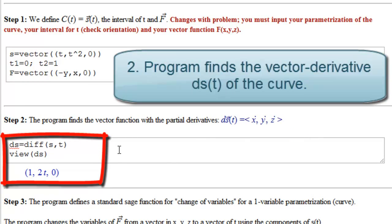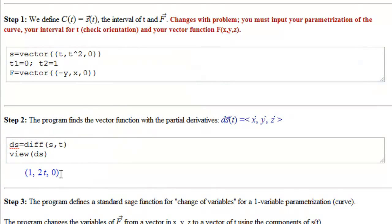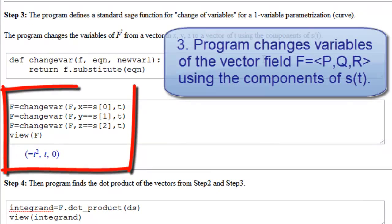The second thing we do is take the vector derivative. The program finds it for us. Remember that that's the derivative of t, 1. The derivative of t squared, 2t, and the derivative of 0 is 0. The third step is to let the program change the variables for us. So we tell it, every place you see x, substitute the first component of s. Every place you see y, substitute the second component. Every place you see z, the third component. And we get what we saw: minus y squared, which would be minus t squared, x which is t, and z equal to 0.